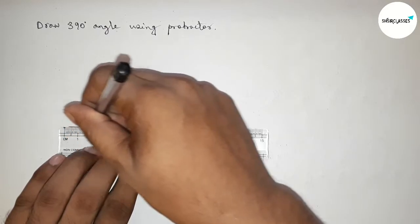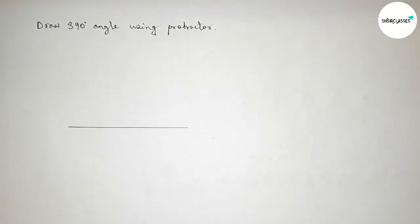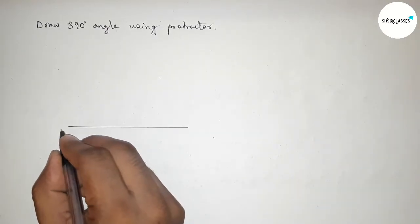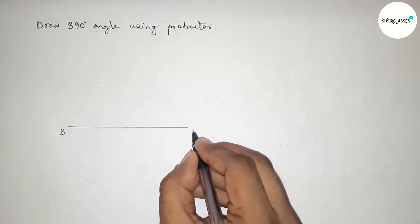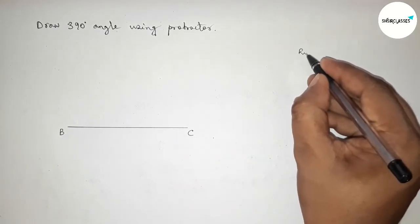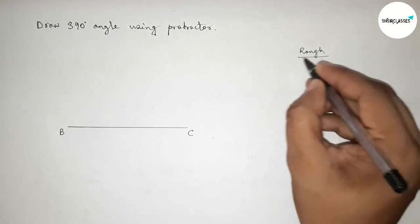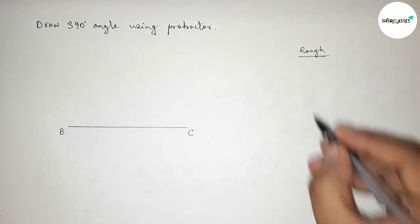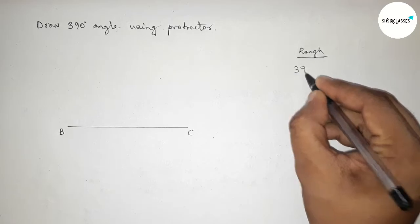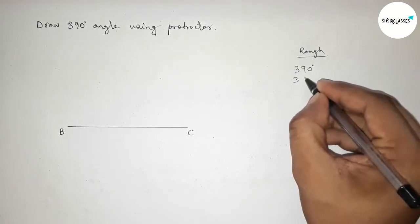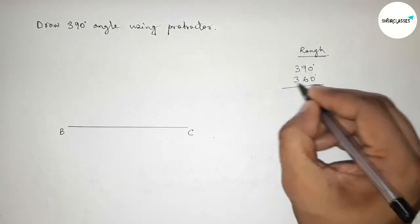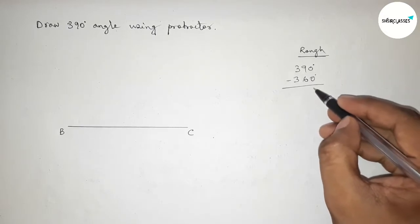And taking here point B and here C. Now roughly discussing here some calculation. So if we subtract 360 degrees from 390 degrees first, so subtracting this, so this is zero and this is here 3 and this is obviously zero.